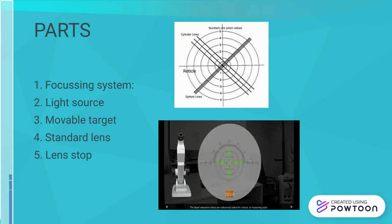A part of the focusing system is a light source which provides light to the instrument, a movable target, a standard lens with reference to which the eye power is calculated, and the lens top which allows holding the lens in place.